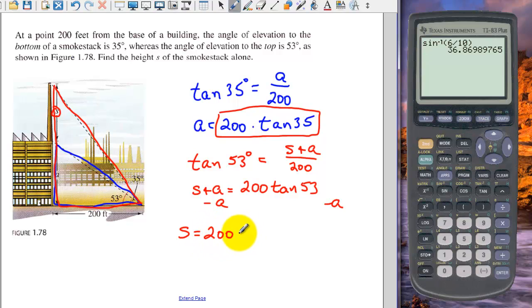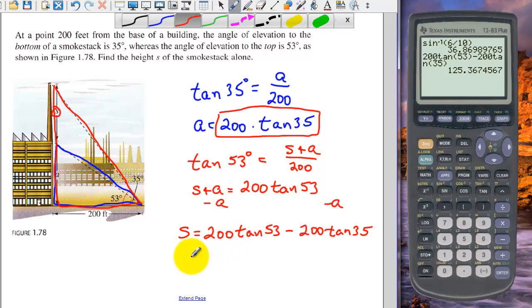So let's use our calculator to determine that answer. So we have 200 tangent of 53 degrees. And remember, we had just checked to make sure our calculator was in degree mode. And we get approximately 125 feet.